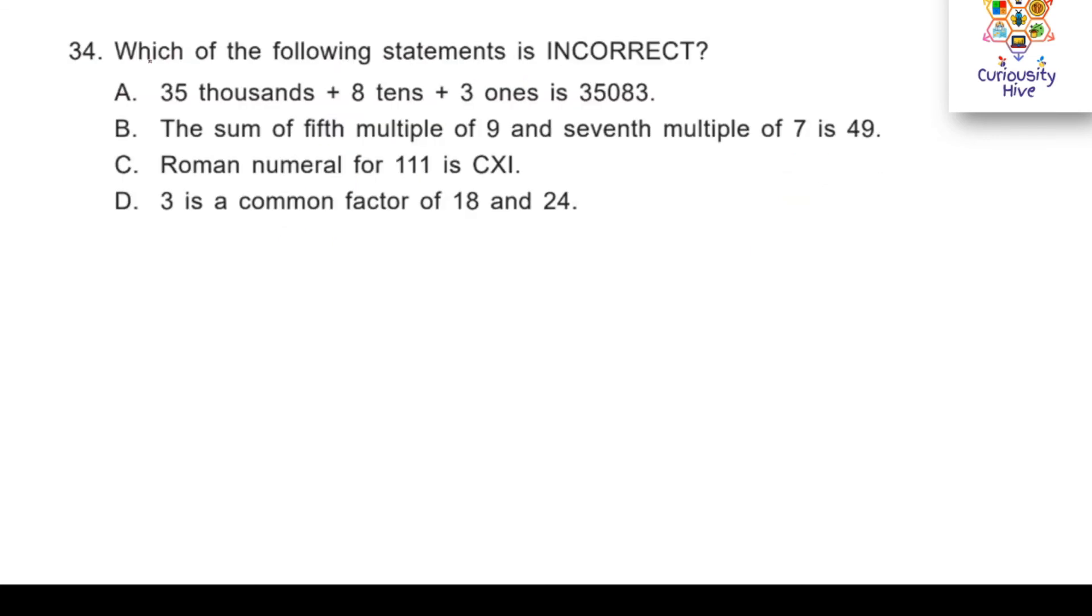Next question. Which of the following statements is incorrect? Given options below: A says 35,000 plus 8 tens plus 3 ones. Is it 35083? B says sum of fifth multiple of 9 and 7 multiple of 7 is that is 49. C says Roman numeral for 111 is CXI and D says 3 is a common factor of 18 and 24. Think about it and choose the incorrect one.